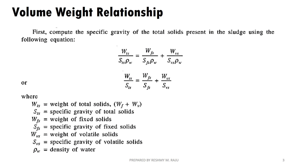Using this equation, we use the parameter specific gravity — that is density. We will write about three factors. The relationship with sludge treatment methods is: W_ST is equal to W_Fs divided by S_Fs, plus W_Vs divided by S_Vs.